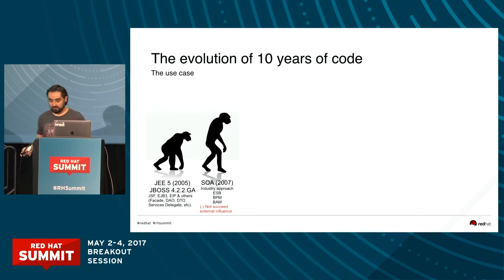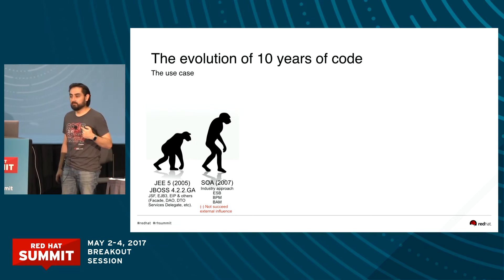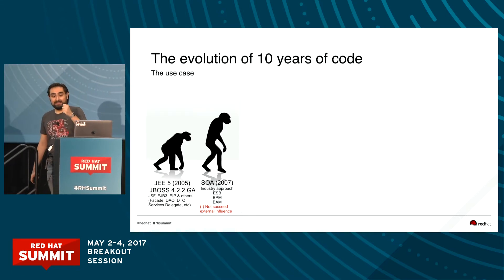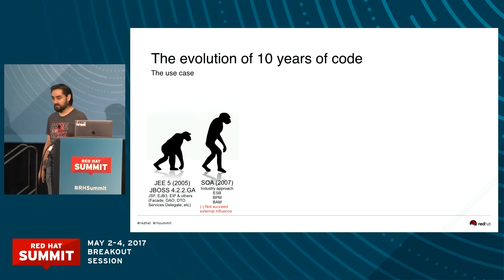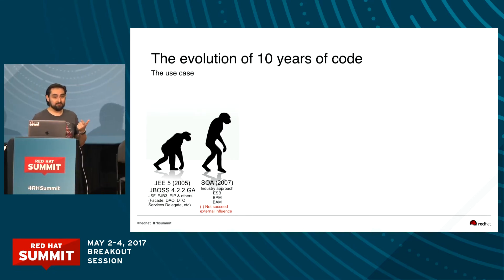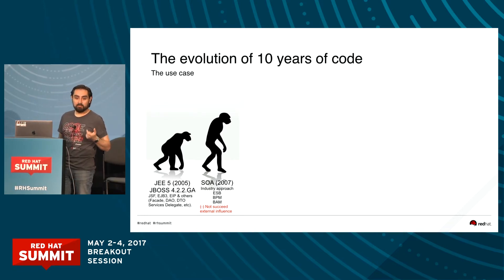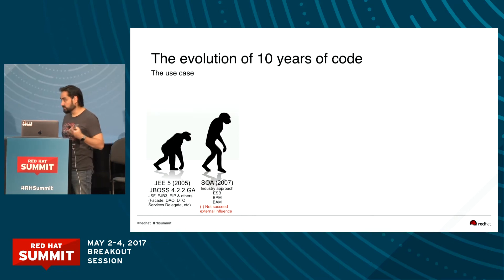Then what happened? There came the buzzword that brought a lot of pain to the industry. We didn't put it inside our products, but in the banks we worked with, almost every bank has those products. They have an ESB, they have a BPM, and they have a mess of code put inside these products. But almost nobody applied the patterns and principles of service-oriented architecture. They forgot about the architecture and just used the products.